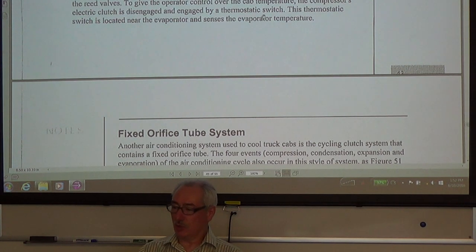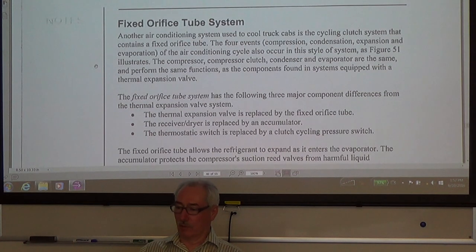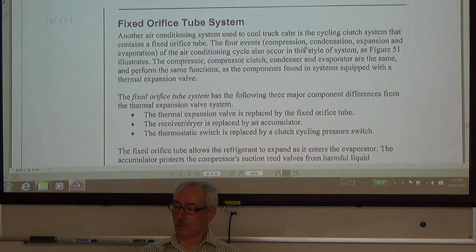We have a thermostatic switch. The thermostatic switch is located near the evaporator and senses the evaporator temperature. With a fixed orifice tube system, this is another air conditioning system used to cool truck cabs. It's a cycling clutch system that contains a fixed orifice tube. These systems are called CCOT, cycling clutch orifice tube.